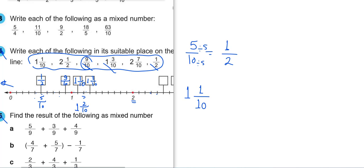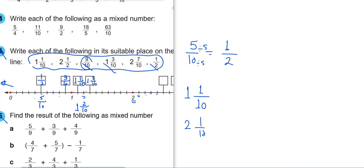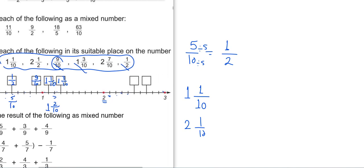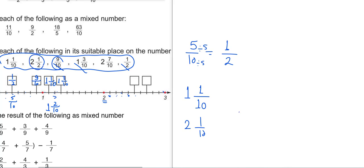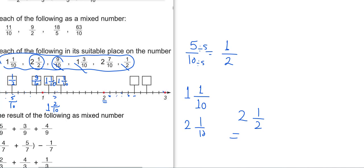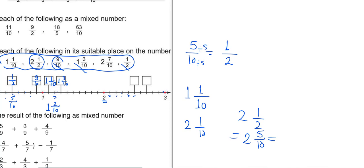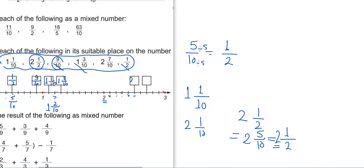Then we reach 2, and continue: 2 and 1 over 10, 2 and 2 over 10, 2 and 3 over 10, 2 and 4 over 10. And here we have 2 and half — 2 and 5 over 10. If we simplify 5 over 10 as before, we get half, and the whole number is 2, so here we have 2 and half.